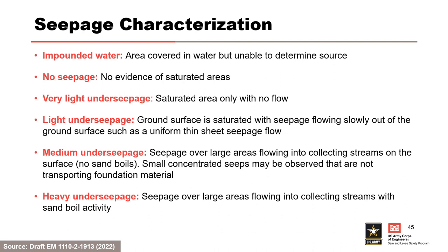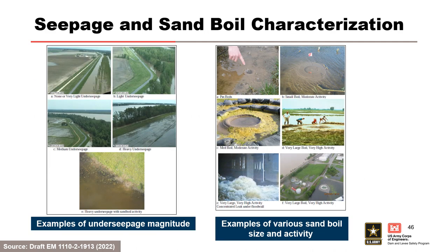The magnitude of under seepage observed during a flood event is usually a good indicator of initiation of backward erosion piping. Generally, under seepage conditions worsen as the river elevation rises and often respond relatively quickly to changes in river elevation. Under seepage is estimated based on the quantity of seepage water emerging from the ground at the land side toe. Consistent definitions of under seepage magnitude are recommended for use in flood events so that comparisons can be made between flood events and levee systems, and can be used to calibrate the team and overcome previous biases.